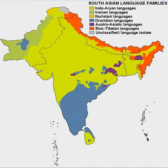Apabhramsa authors include Sarahapada of Kamarupa, Devasena of Dhar, Pushpadanta of Manakhet, Muni Ramsimha, Hemachandra of Patan, and Ryu of Gwalior. An early example of the use of Apabhramsa is in Vikramorvasiya of Kalidasa, when Pururava asks the animals in the forest about his beloved who had disappeared.